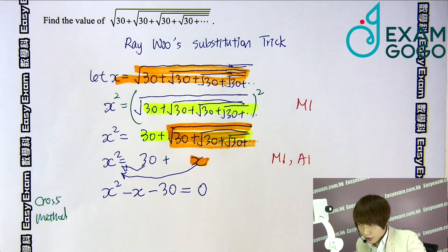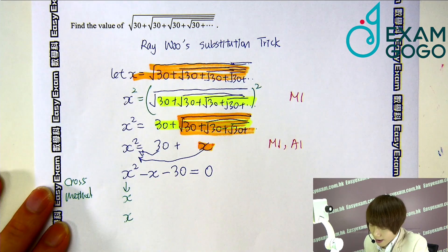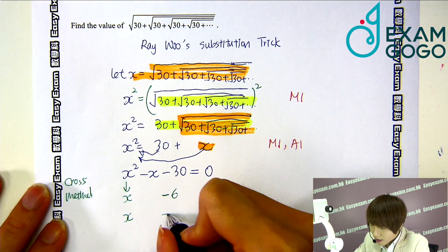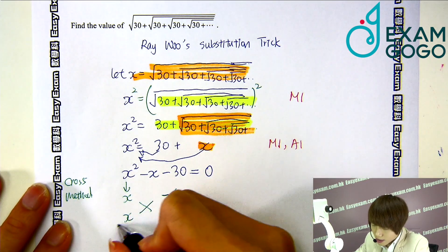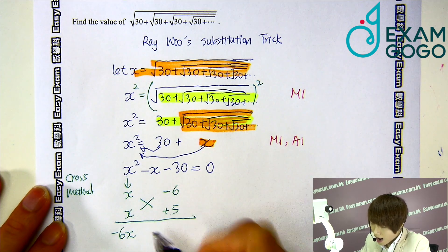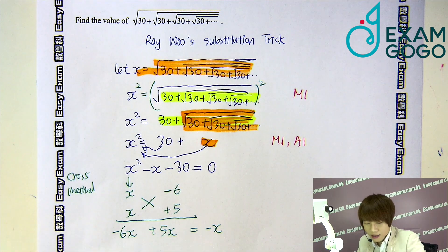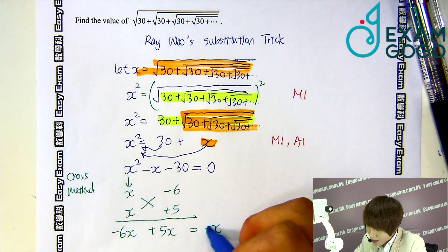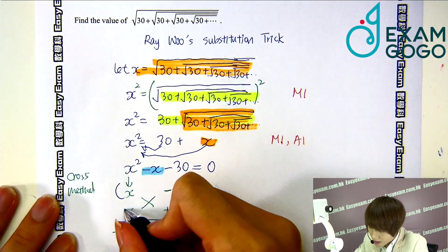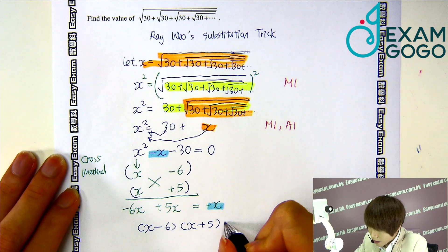Of course, you learned the cross method during your GCSE. For the cross method, I'm going to break x² into x times x. For −30, after thinking for a few seconds, pick −6 times +5. Doing the cross product: −6x + 5x = −x, which matches the middle term. So the factors are (x − 6)(x + 5).